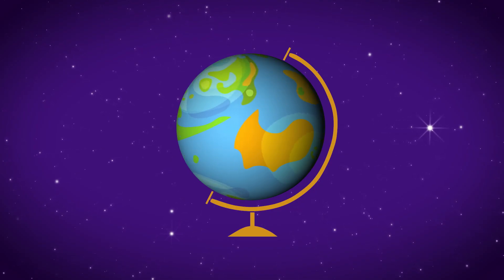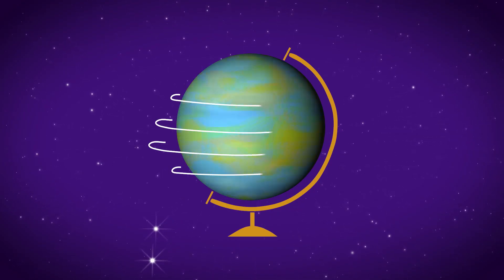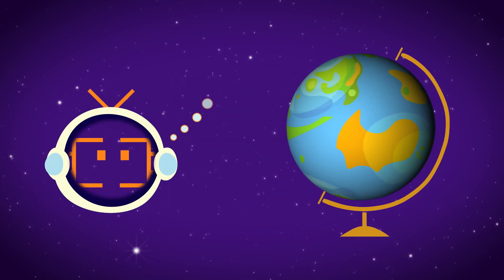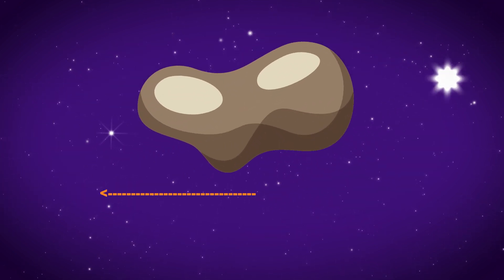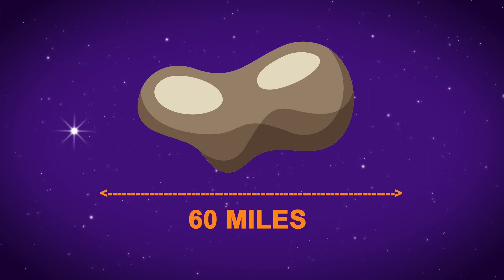Ever wonder how big an asteroid would have to be to wipe out life on the planet? Turns out, about 60 miles wide, give or take.